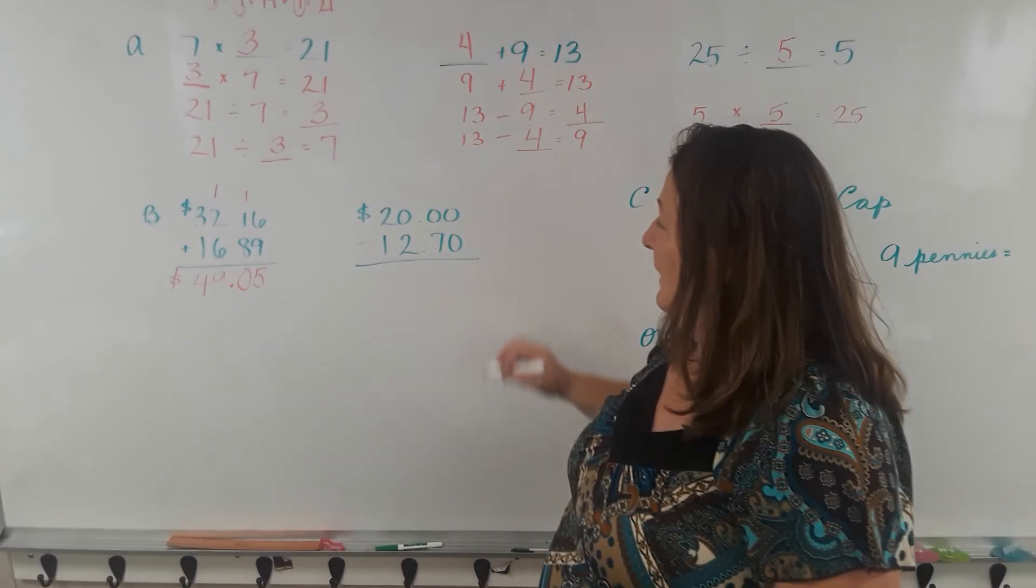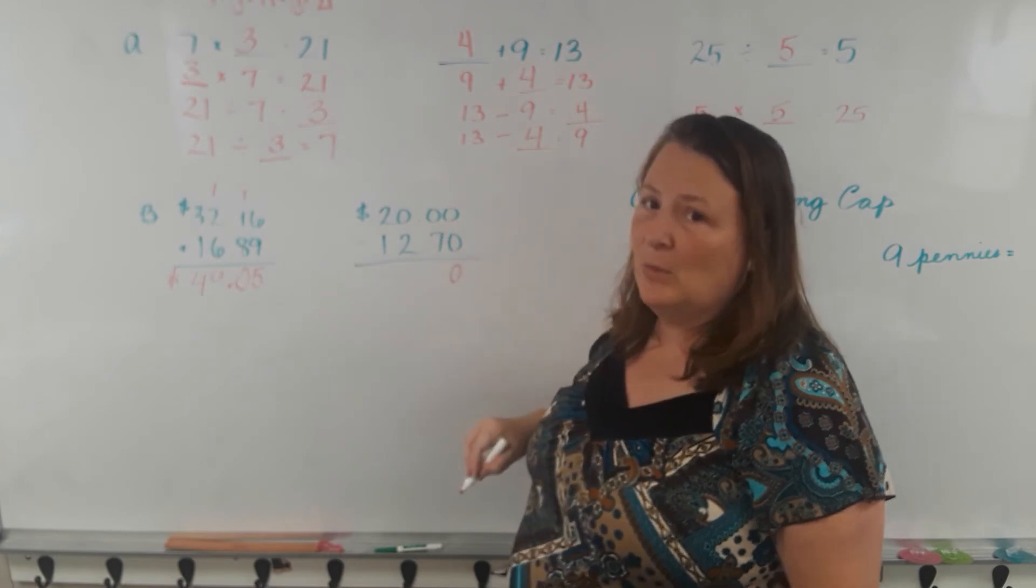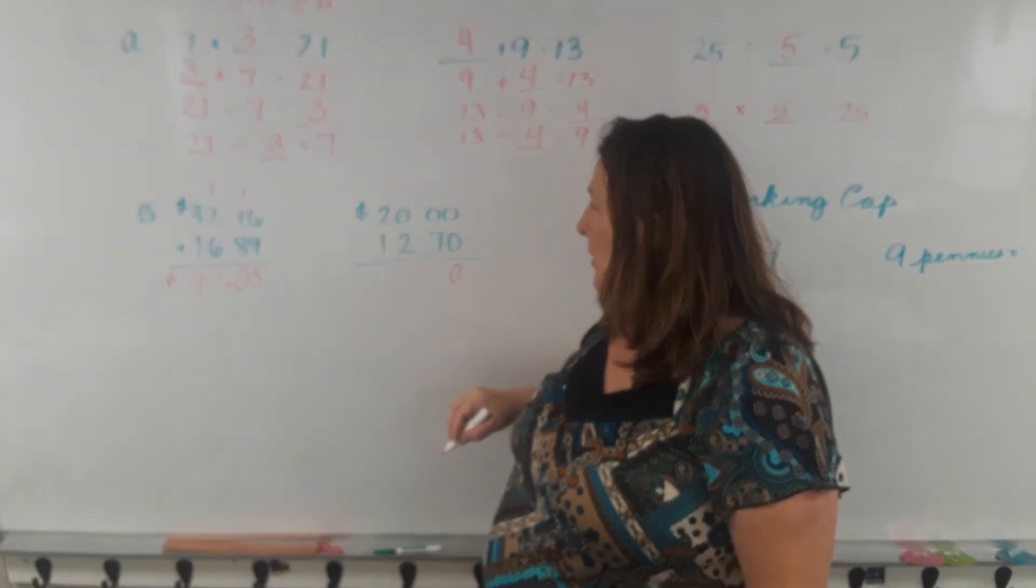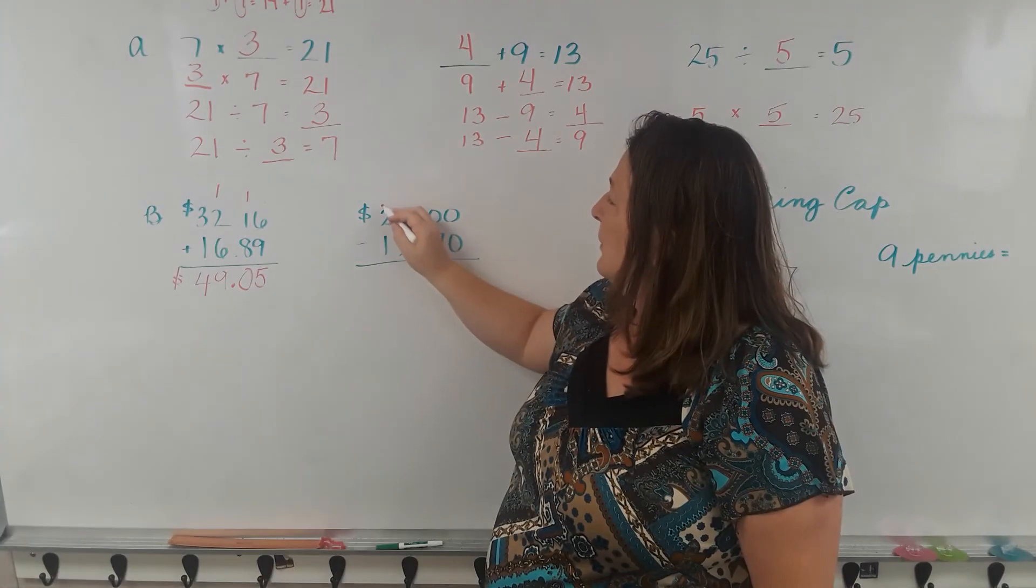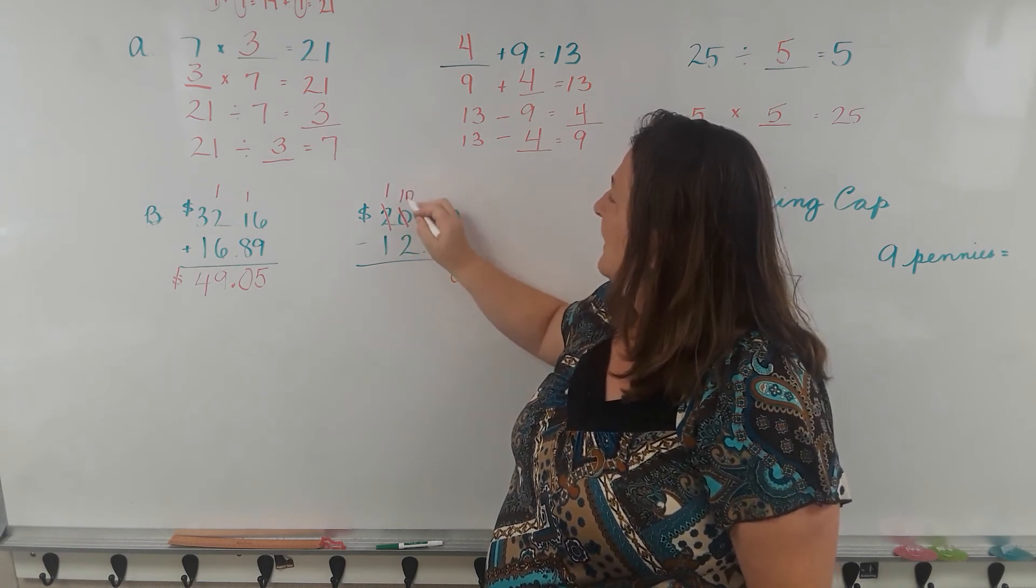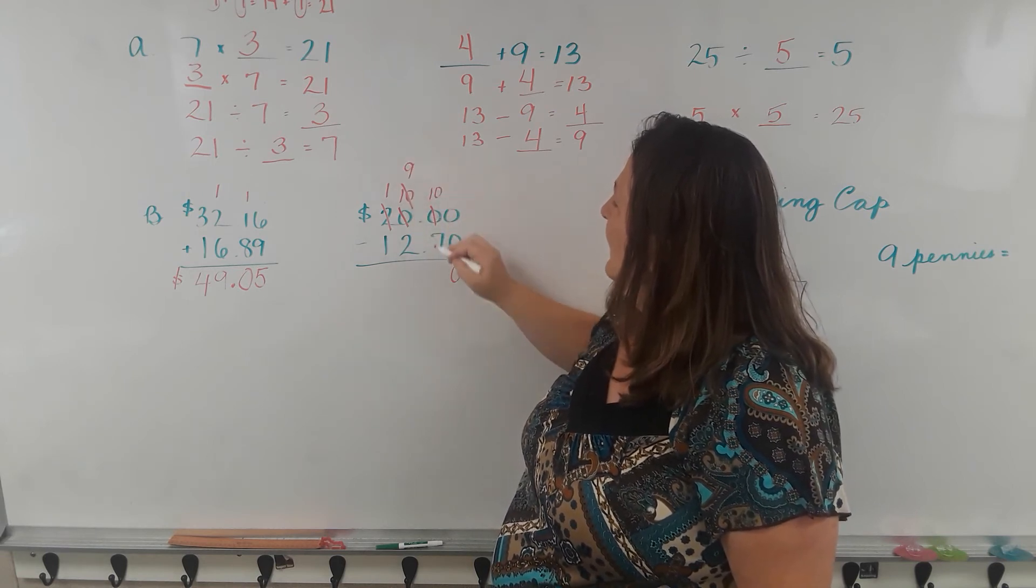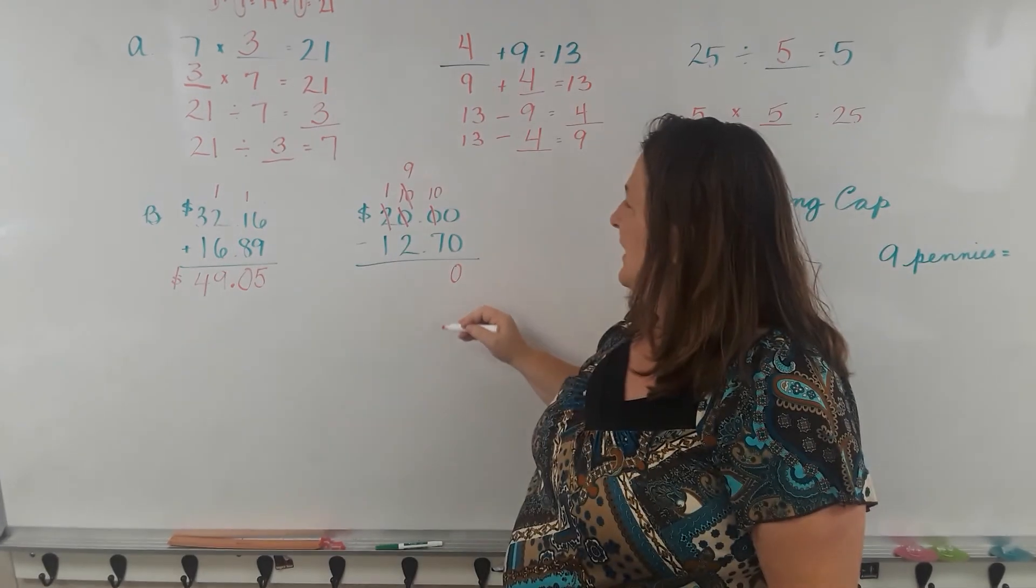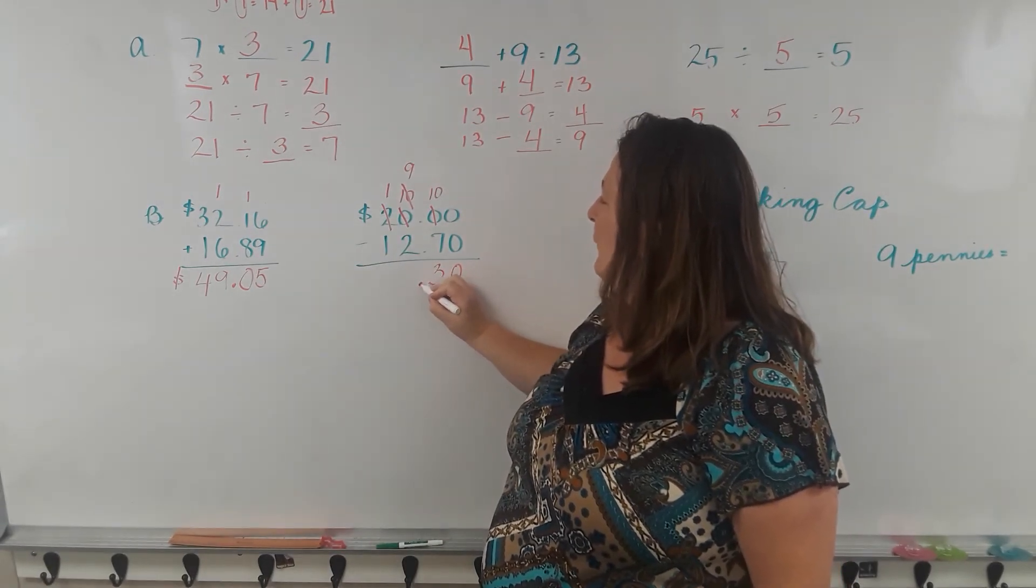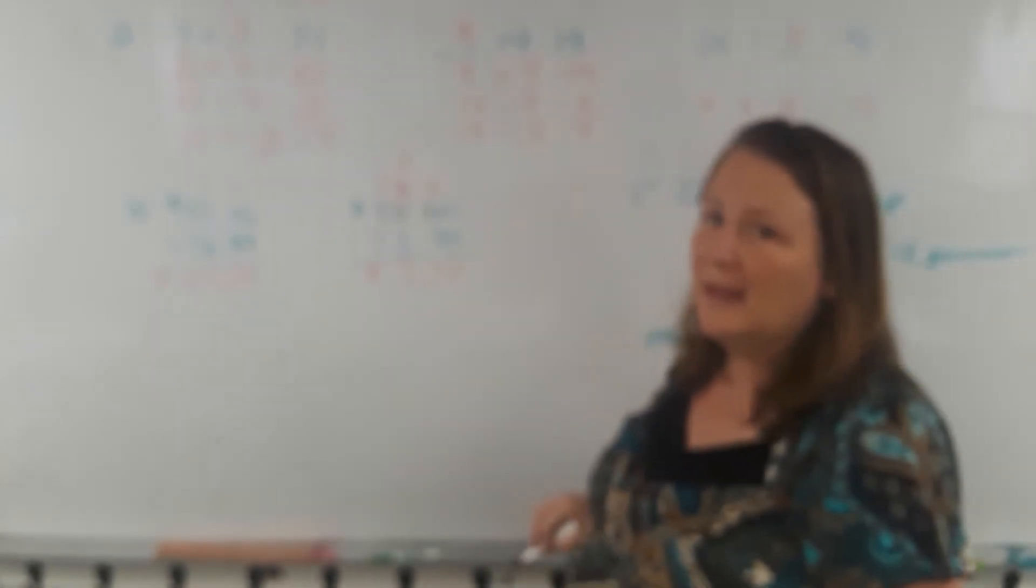Now we're subtracting. 0 minus 0 equals 0. 0 minus 7, you have to borrow. Can't borrow from this 0. You have to borrow from the 2 and make it a 1. You make this 0 a 10. You borrow from this 0 and make it a 9, and you make this 0 a 10. Now 10 minus 7 equals 3. Don't forget your decimal point. 9 minus 2 equals 7, and 1 minus 1 equals nothing. So we have $7.30.